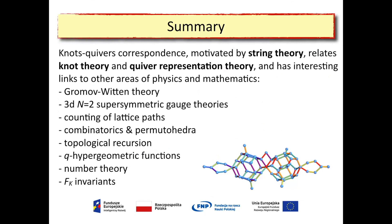Let me summarize. I hope I presented at least briefly what the knots-quivers correspondence is and its string theory interpretation. I didn't discuss much the role it plays for 3D N=2 supersymmetric gauge theories, or the counting of lattice paths and relation to topological recursion and permutohedra. I hope that Sergei Gukov told you something about the relation to FK invariants, where analogous quivers appear. There is still much to be done, and I encourage everyone to work on these topics. Thank you.